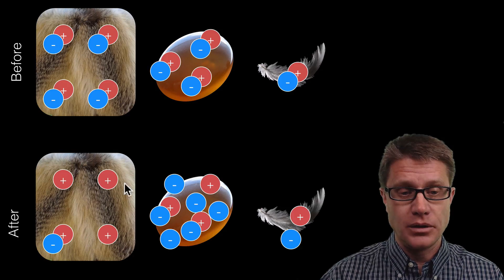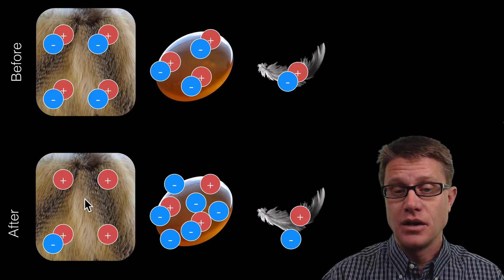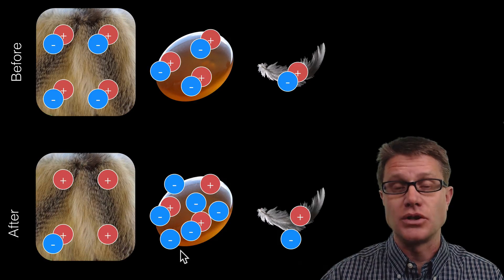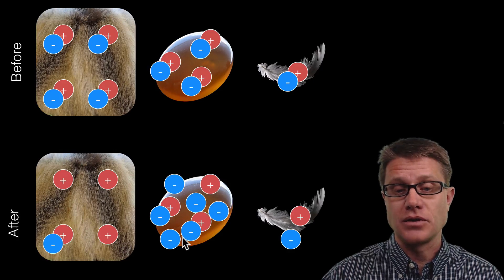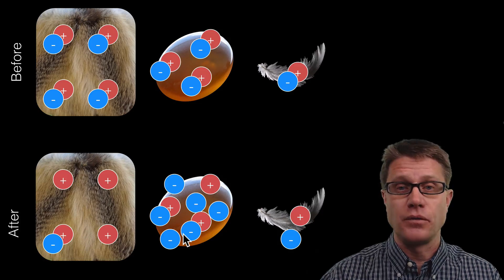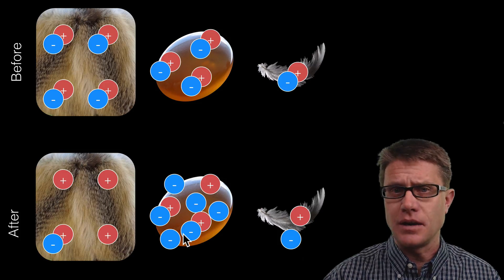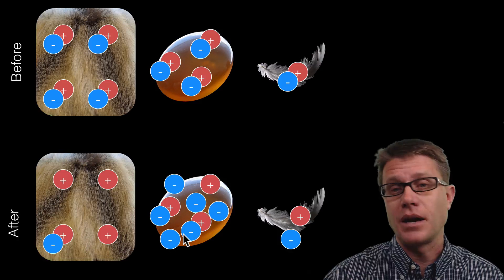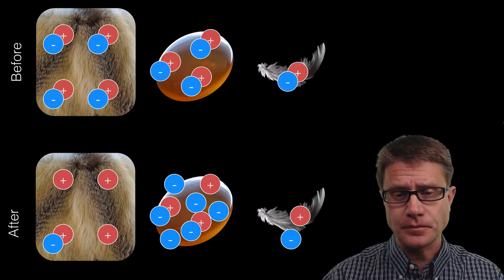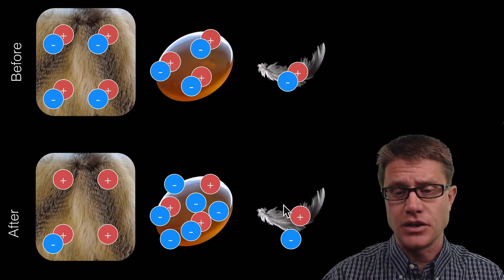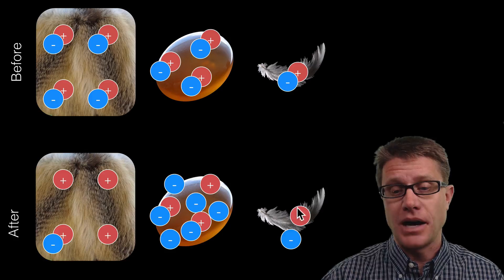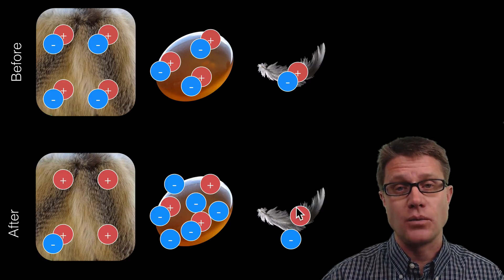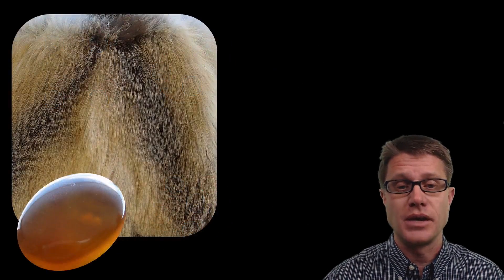If we look at the wool now, it has a plus three charge, and the amber is going to be a minus three charge — we have transferred those electrons to the amber. What happened to the total number of charges before and after? They are exactly the same; we have just moved where they are. And so when you hold that amber above the feather, it is inducing charge inside the feather. We get a positive charge on one side and that is why it is attracted to the amber.